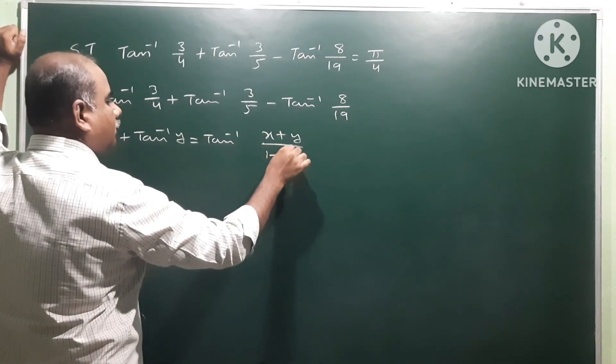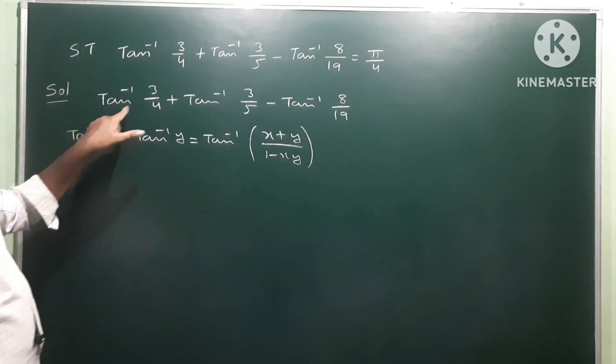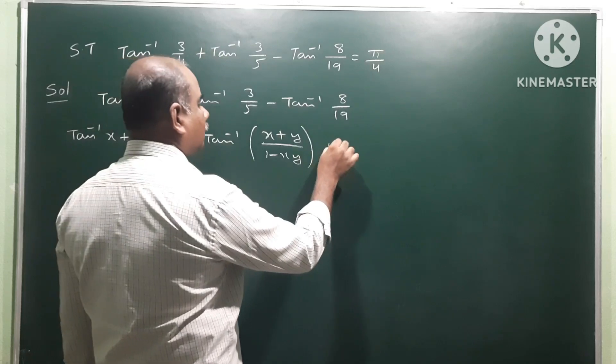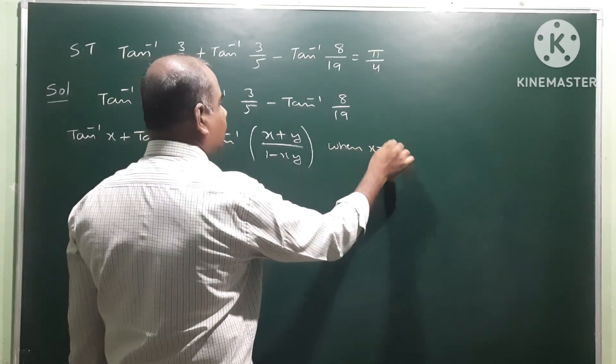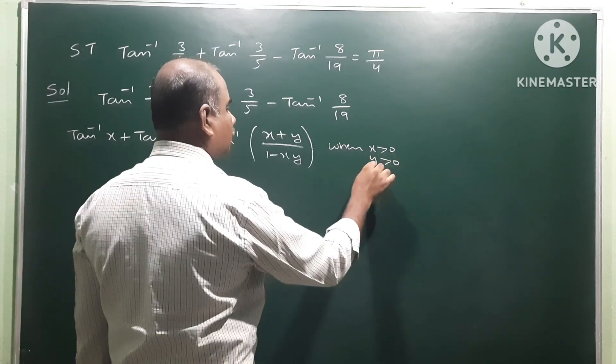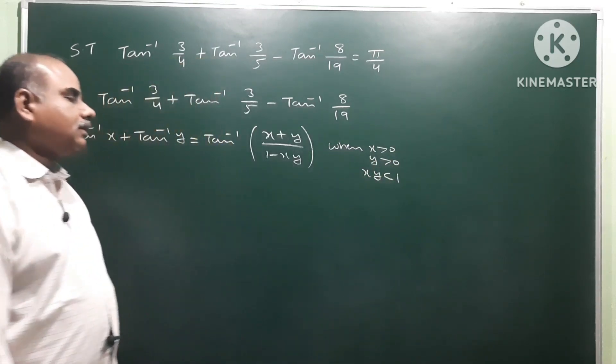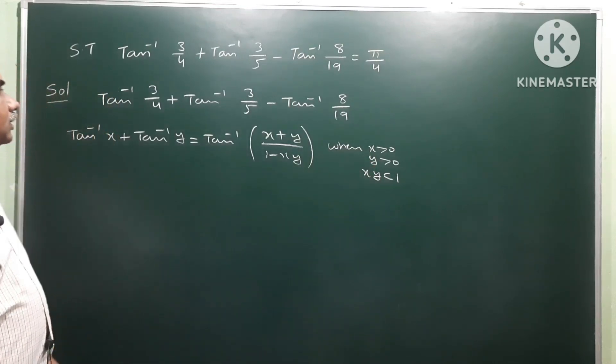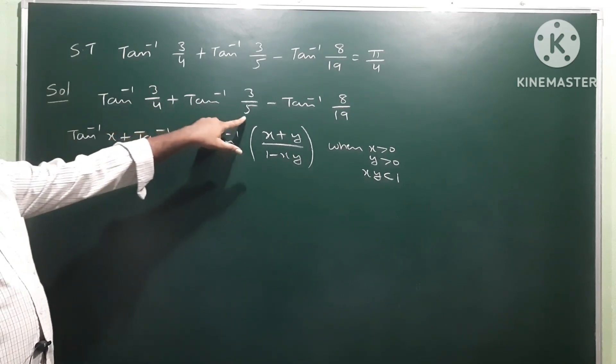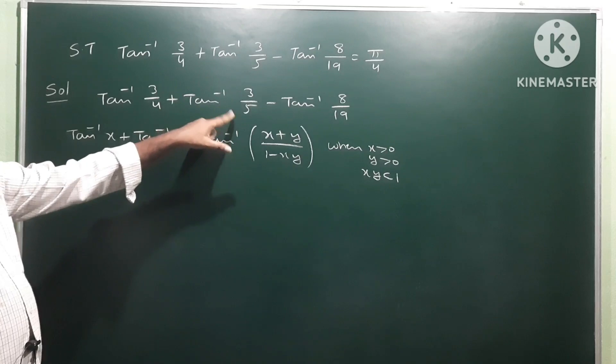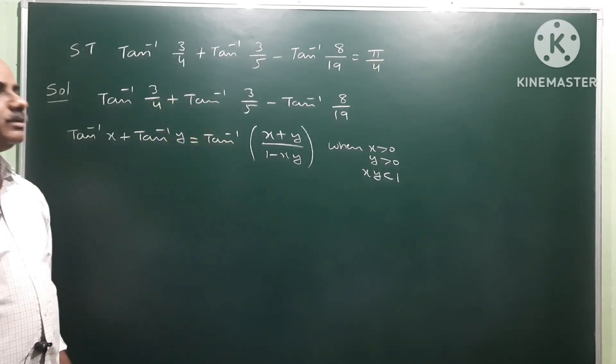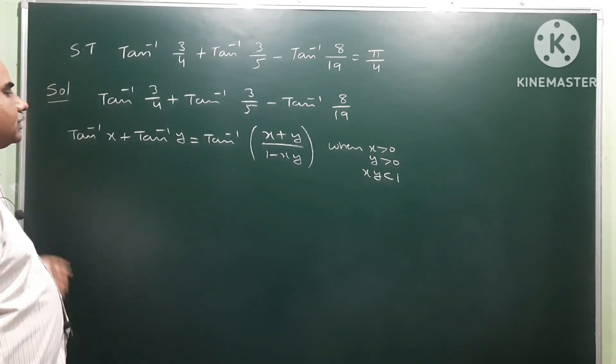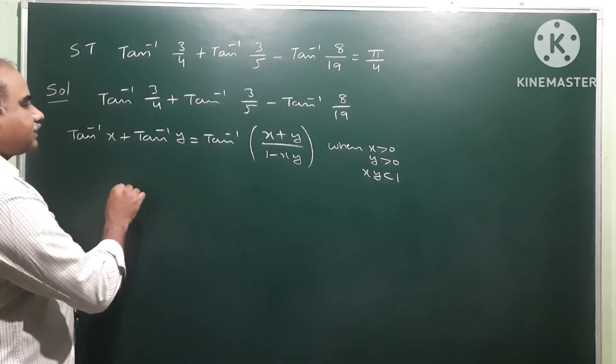x plus y by 1 minus xy. This formula applies when x greater than 0, y greater than 0, and x into y is less than 1. So conditions: x is 3 by 4, y is 3 by 5, both are greater than 0, and x into y means 9 by 20, which is less than 1.